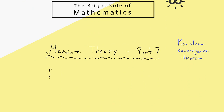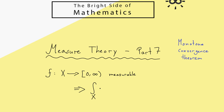Recall we have introduced the Lebesgue integral for non-negative measurable functions defined on some measure space x. For such functions we now know that the Lebesgue integral is well defined. The notation we have chosen is this integral symbol where we put the measure space x here, the function f here, and the measure itself goes in with d mu, where mu is the measure defined on x. The integral being well defined means that this symbol is a number between 0 and infinity, and in the worst case it could be the symbol infinity.